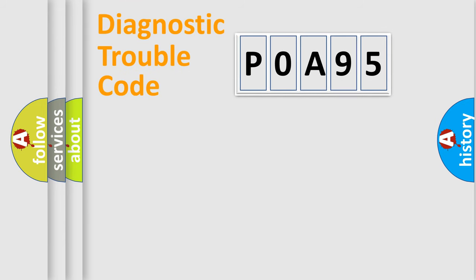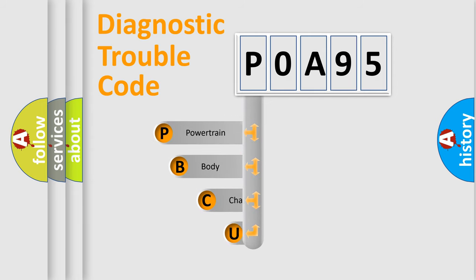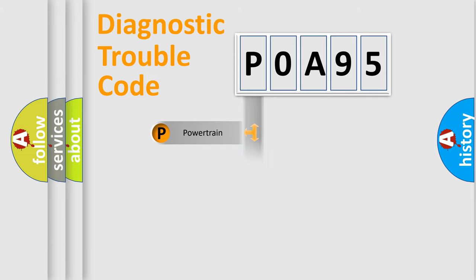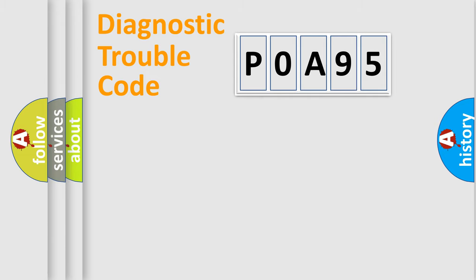Let's do this. First, let's look at the history of diagnostic fault code composition according to the OBD2 protocol, which is unified for all automakers since 2000. We divide the electric system of the automobile into four basic units: Powertrain, Body, Chassis, and Network.